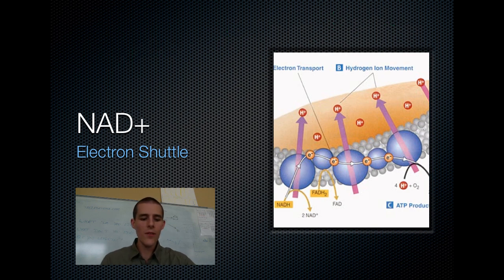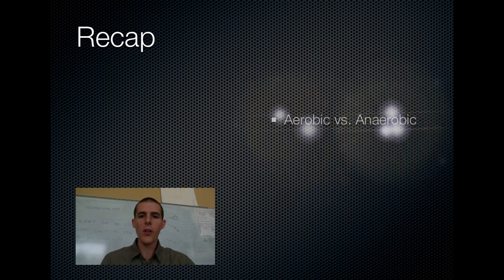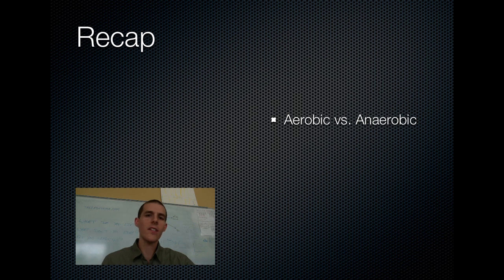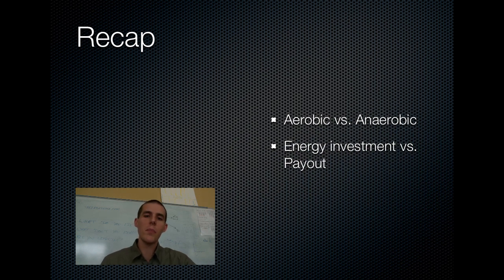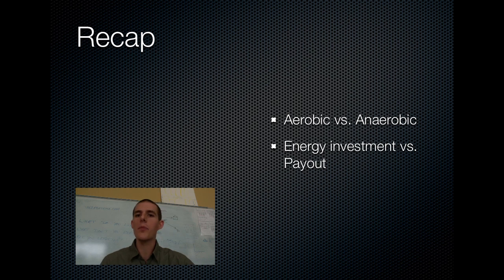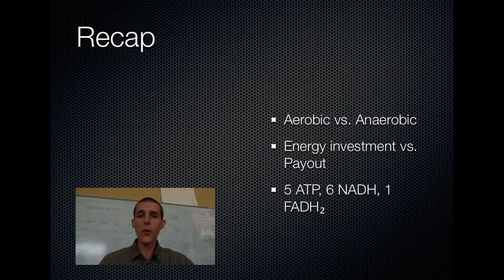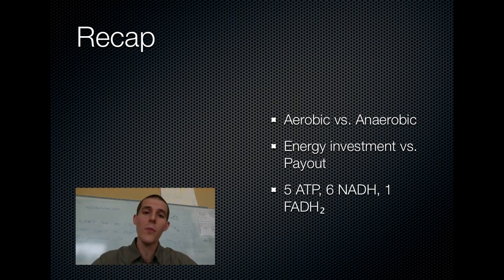Just to finish up, one last recap to keep it all straight. Aerobic versus anaerobic: glycolysis is an anaerobic process and can happen without oxygen, but the Krebs cycle is aerobic and only happens if there is oxygen. Energy investment versus energy payouts: in the first half of glycolysis we spend two ATPs, but going through the rest of glycolysis and the Krebs cycle we replace those plus extras. ATPs made in glycolysis and Krebs are used by the body immediately. Our total for both processes together: five ATPs made, six NADHs, and one FADH2. That covers our intro to glycolysis and the Krebs cycle — hope it was helpful, and join us again on the Lab 207 webcast. Thank you and have a good day.